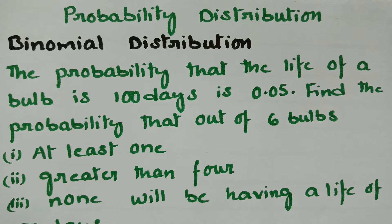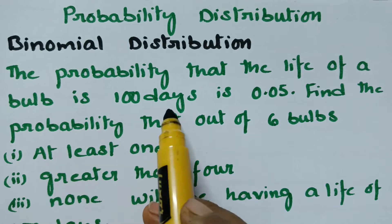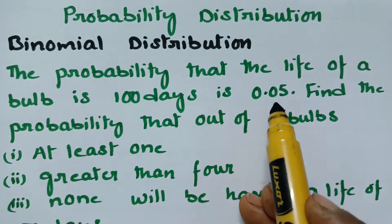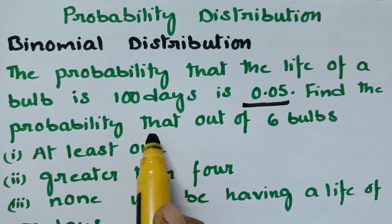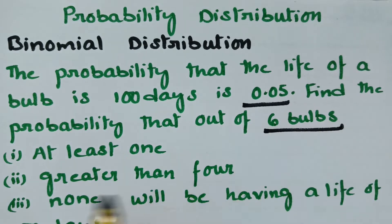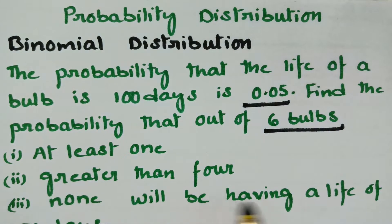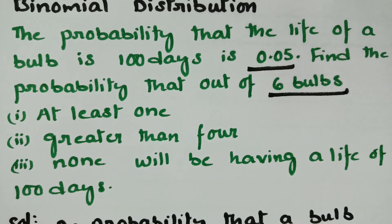Today's video is from binomial distribution. The probability that the life of a bulb is 100 days is 0.05. Find the probability that out of 6 bulbs, at least 1, greater than 4, and none will be having a life of 100 days.